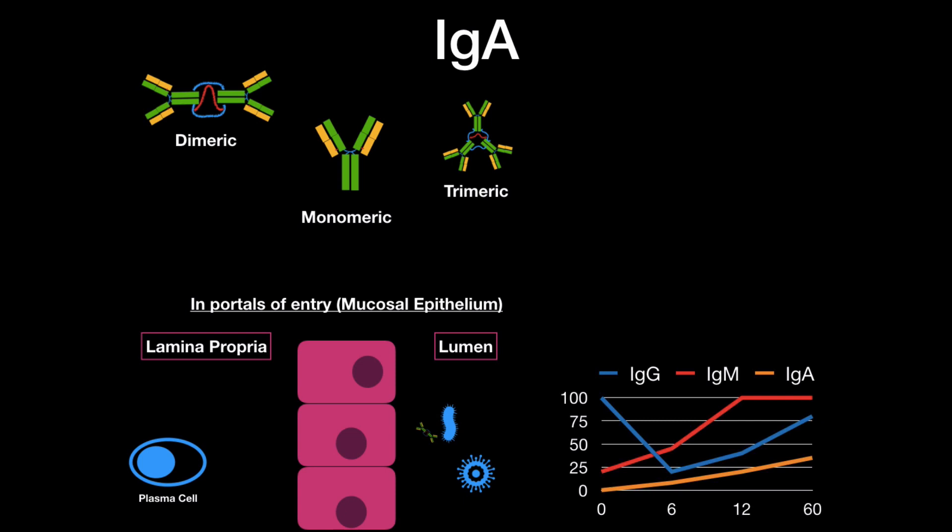Next, we have IgD. We have very low amount of them in the serum, under 1%. And the reason is that most of them are found on the surface of B cells or on the surface of mature B cells to be exact. They exist, therefore, mostly as monomeric. The precise role of IgD is a little unclear yet, but they are on the surface of B cells, so they do help them bind and differentiate.